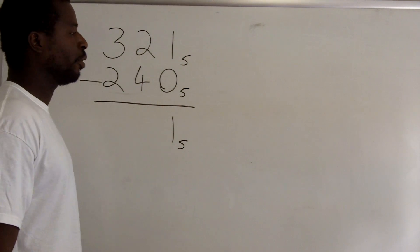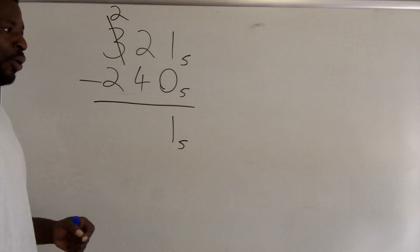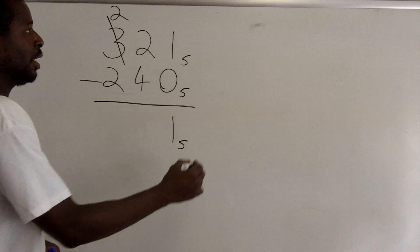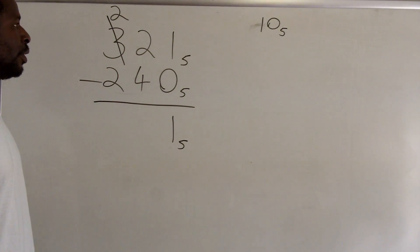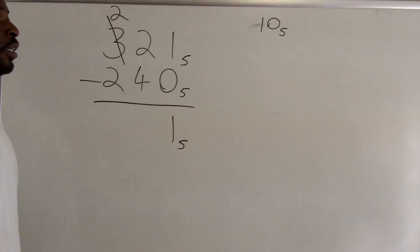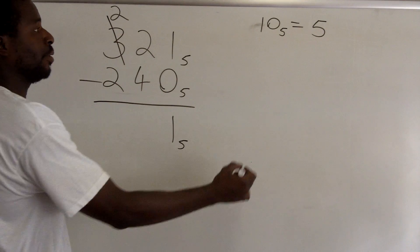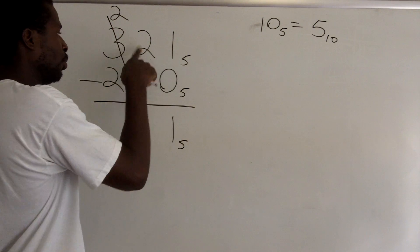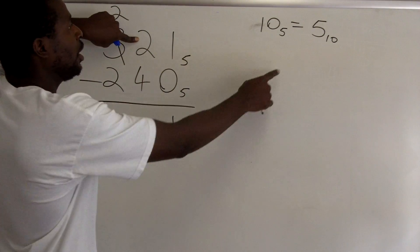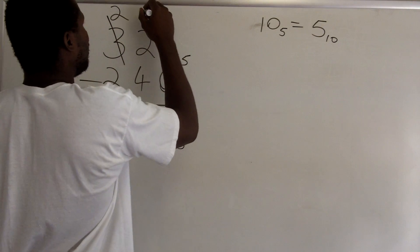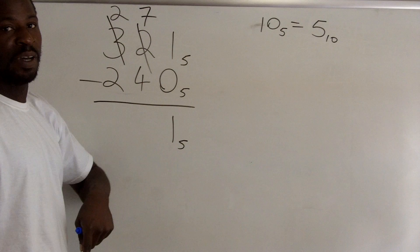Now 2 minus 4 — I can't take 4 away from 2, so I have to borrow. I borrow 1 from the next column, which becomes a 2. But that 1 I borrowed is one place over, so it's actually a 10 in this system. 10 base 5 is really the number 5. So what I'm actually borrowing is the number 5 base 10. I take the 2 and add 5 base 10 to get 7 base 10.